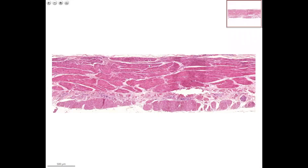Smooth muscle, longitudinal cut and transverse cut with HND staining. Please note that all theoretical details of the smooth muscle final structure you must learn from the lecture material and from your textbooks. Here I will demonstrate only the facts that you can see in the slide. This piece of tissue was taken from the wall of the small intestine, but the mucous membrane was removed, so you only see the two layers of muscles in two different cuts.